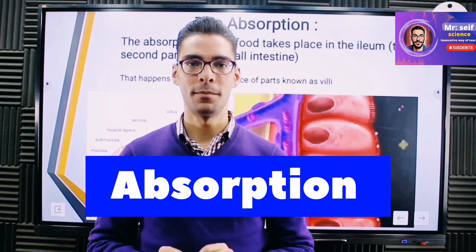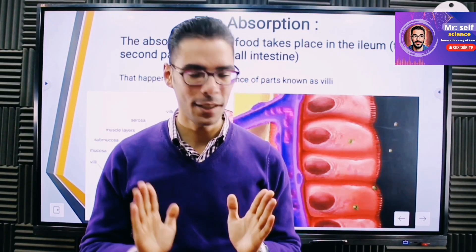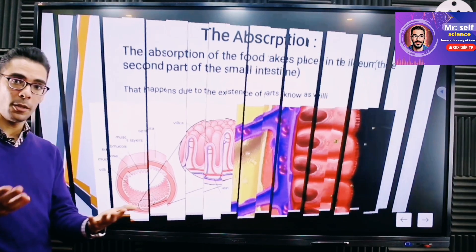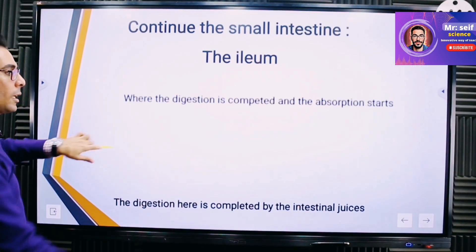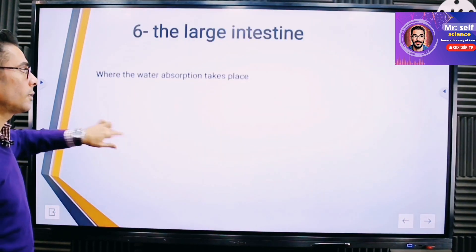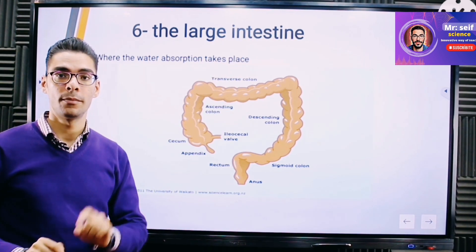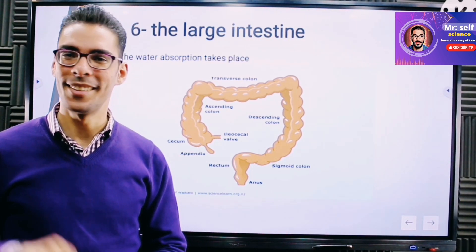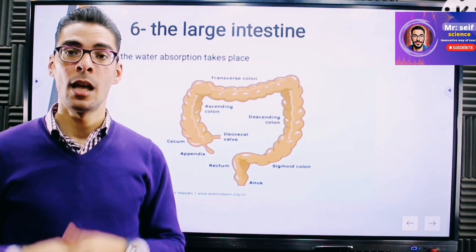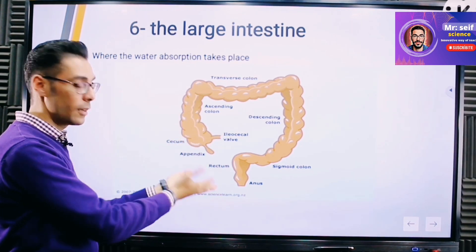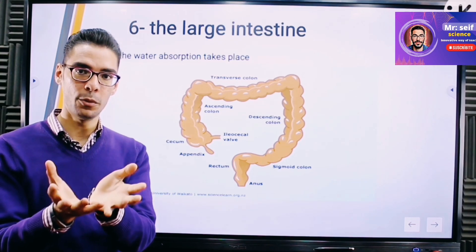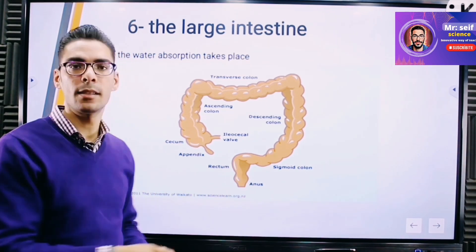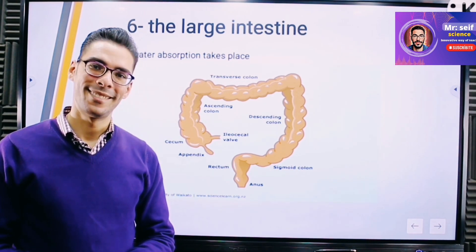This process is known as absorption — specifically, absorption of food — and it happens in the small intestine. The next step is different and happens in the large intestine. The large intestine has two main functions: first, it absorbs water — not food, only water; and second, it delivers the solid waste to the anus so you can get rid of it outside your body.